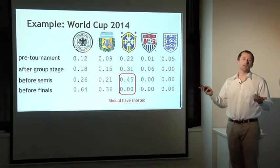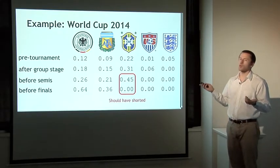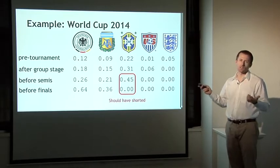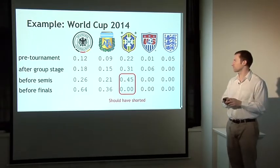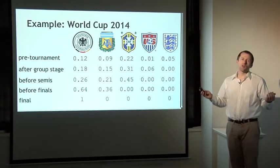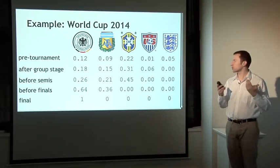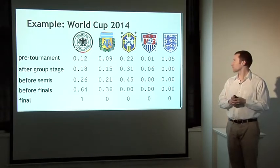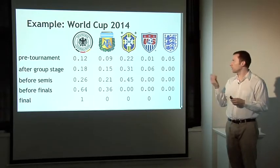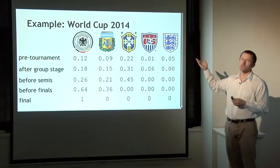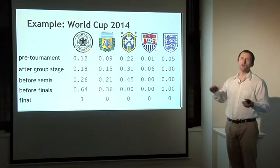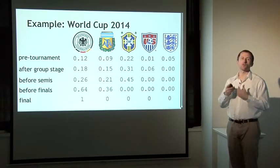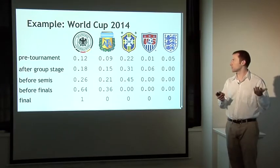Going into the finals there are only two teams left — Germany and Argentina. Those two prices should add up to one because one of those teams has to win, and probabilities should always sum to one. After the whole tournament is over, the only shares that have any value are shares in the German team, because Germany actually won in the end. One way to profit would have been to buy shares in Germany at the beginning for 12 cents and hold them all the way to the end, making a dollar — basically equivalent to traditional sports betting where you place a bet before the tournament starts.